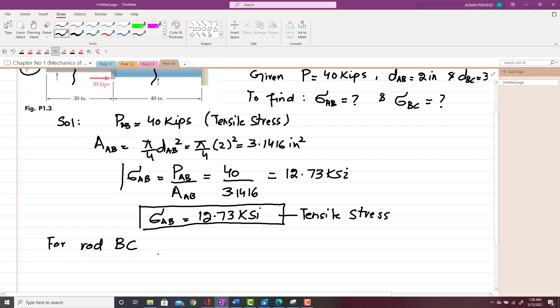So load for rod BC, which is PBC, is equal to 40 minus 2 times 30 KSI, which is equal to -20 KSI. So it shows that it is in compression.